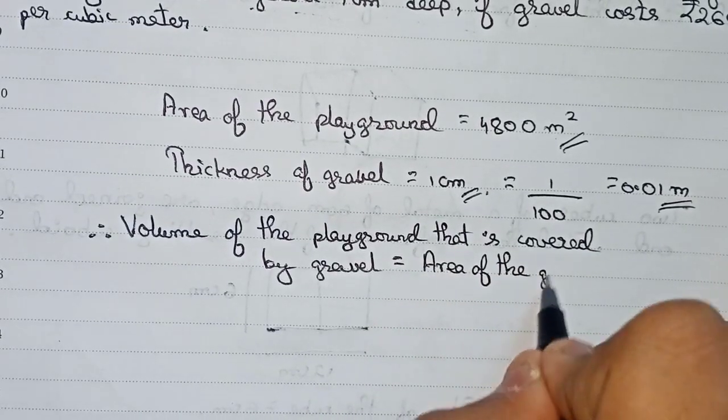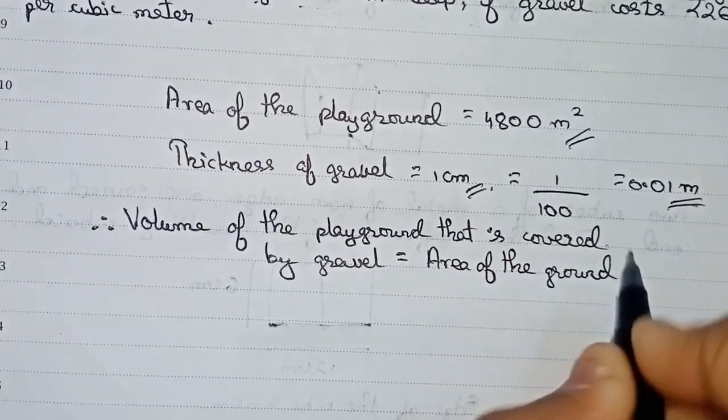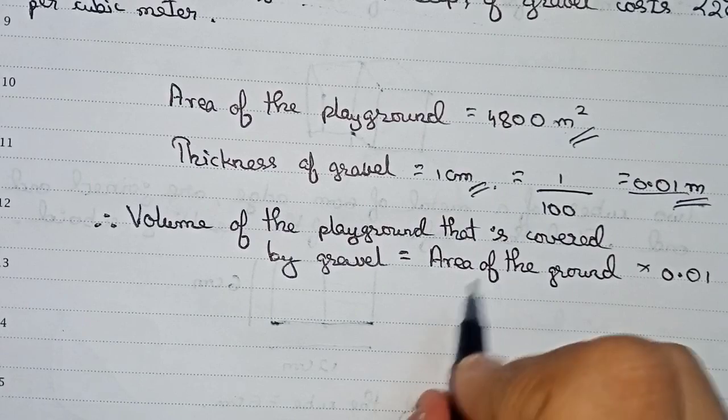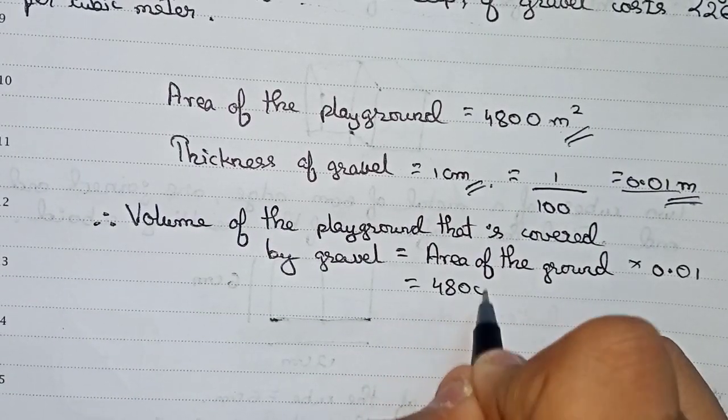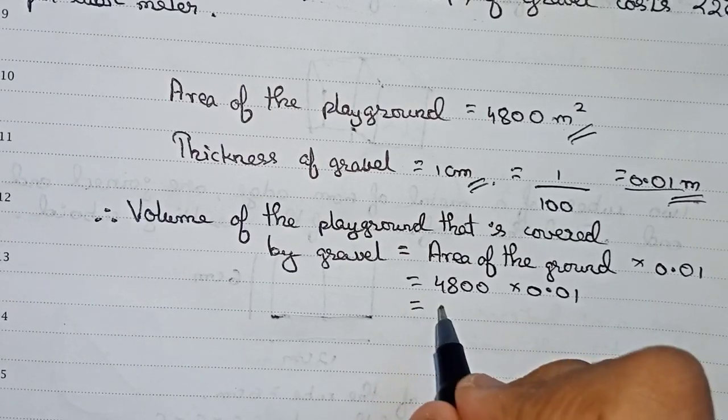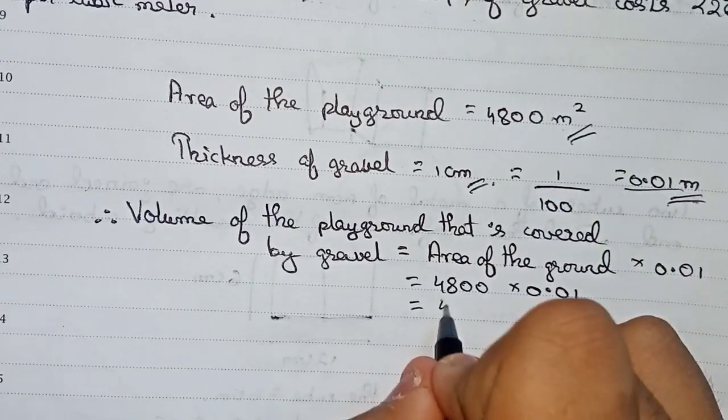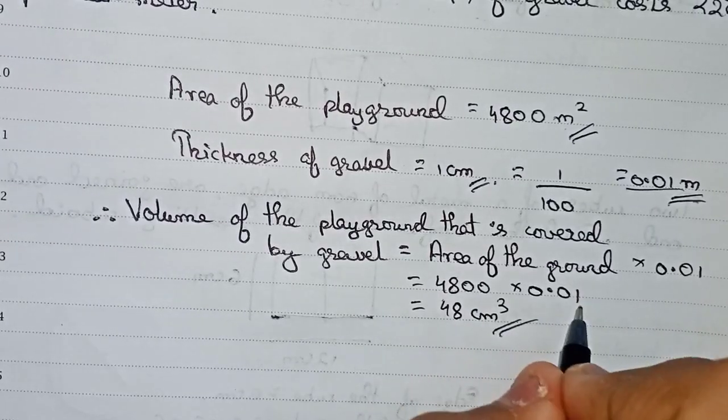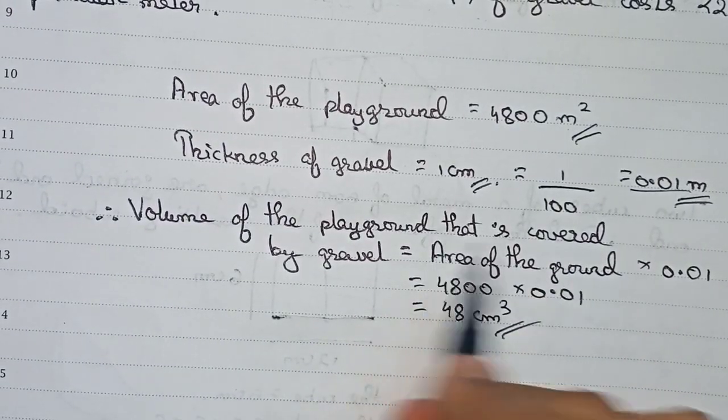The area of the ground is 4800, so 4800 into 0.01, it will become 48. So 48 meter cube. This is the volume of the playground that is covered by gravel.